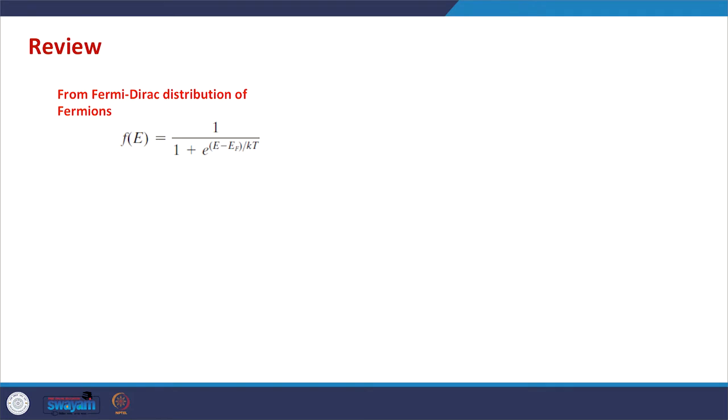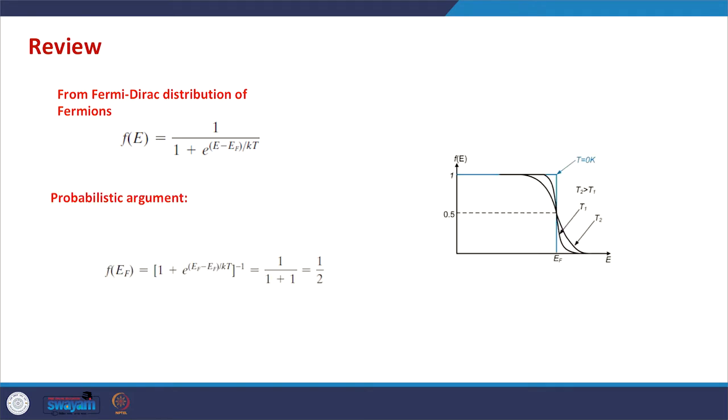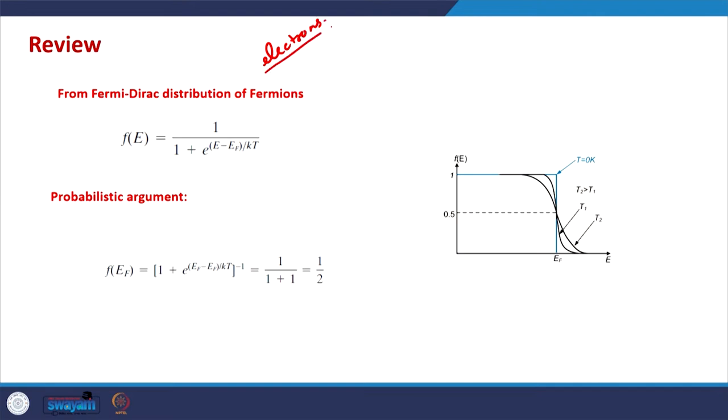Hello everyone. Today we will conclude our discussion on the Fermi-Dirac distribution function and we will start a new topic known as the general model of transport. In the previous class, we saw that fermions — essentially electrons, because electrons are also fermions — are distributed according to a certain function known as the Fermi function or Fermi-Dirac distribution function.